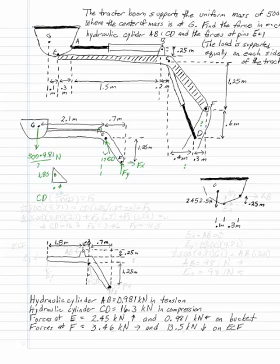So I get CD times the horizontal component, 0.4 over 1.8927, that's the Pythagorean Theorem, equals FX. And my FY gives me 1 half 500 times 9.81 equals CD times the vertical component, which is 1.85 over 1.8927, and FY.